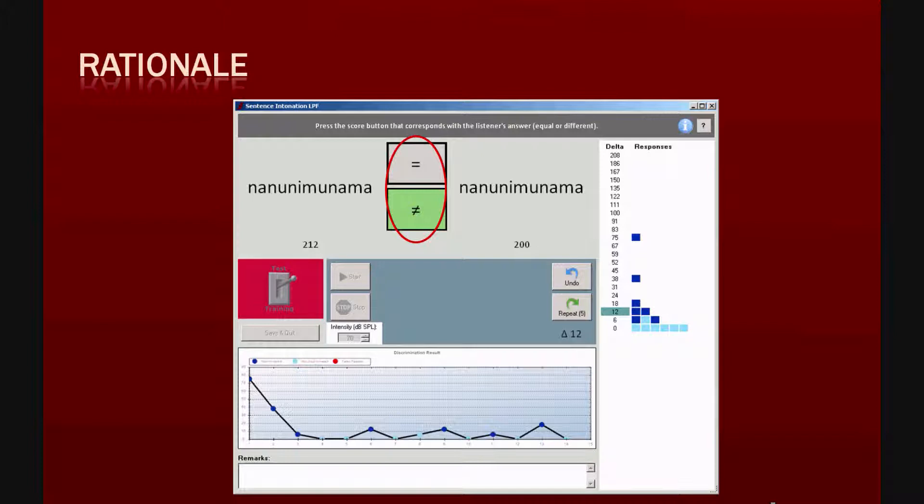The listener should respond equal or different. If the listener discriminates the sounds, delta becomes smaller, and vice versa. Internal controls and stochastic processes improve the test efficacy and accuracy. The graph shows the responses and how the algorithm converges to threshold. The cumulative responses for each delta can be followed on the histogram.